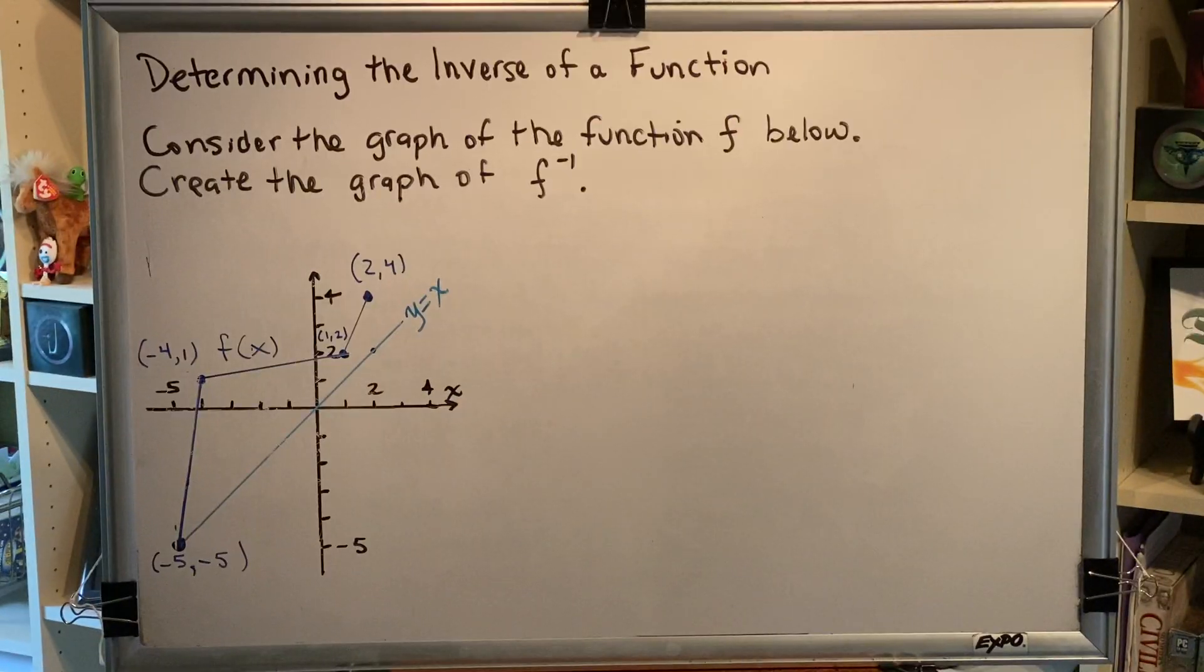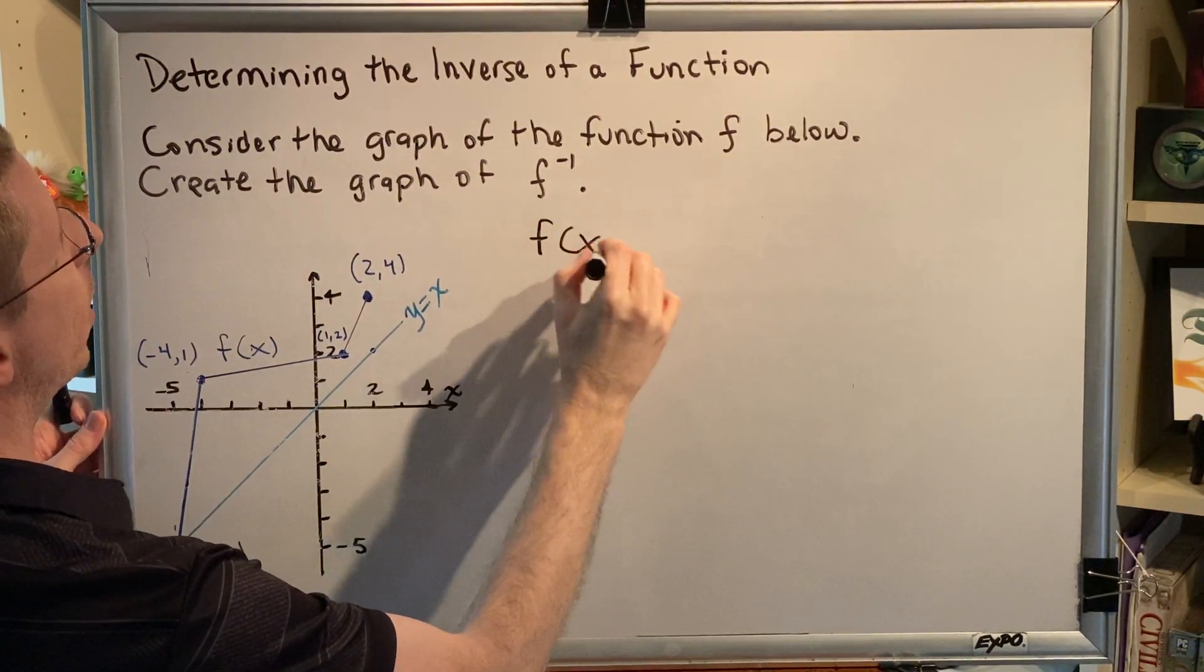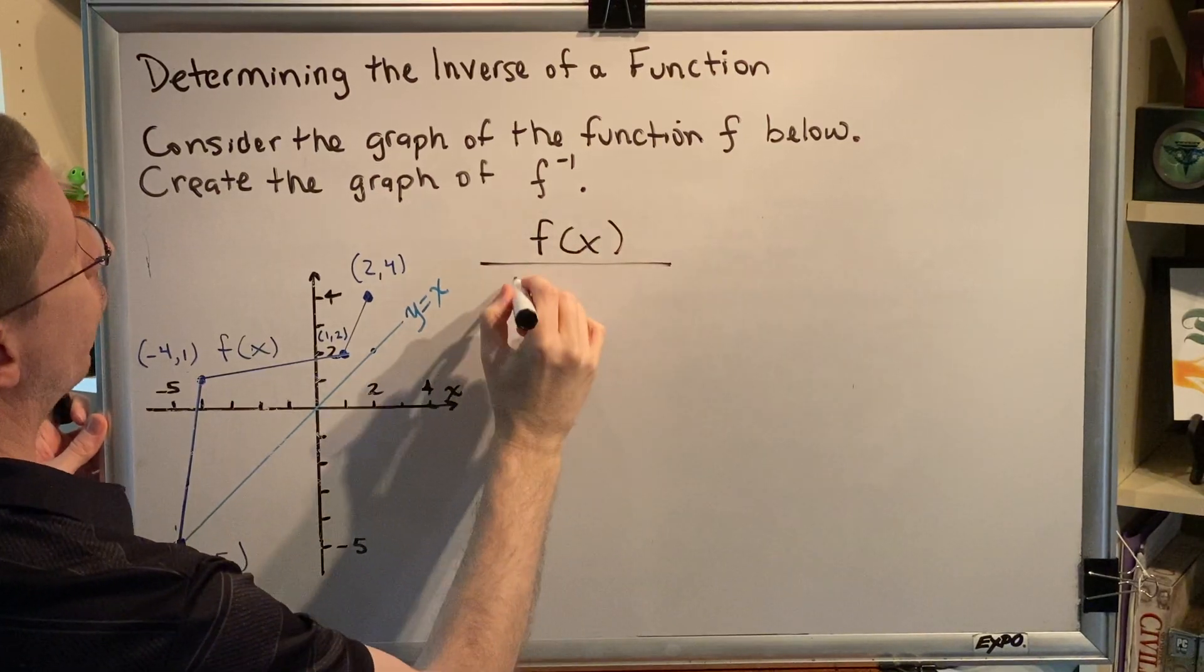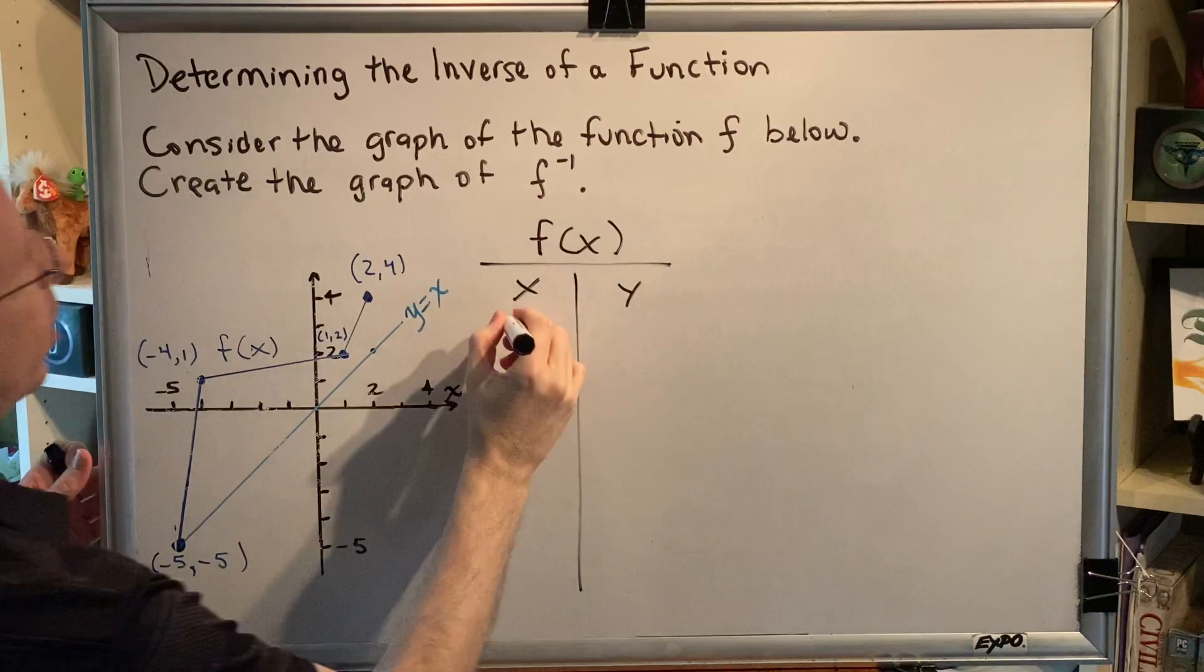So let's go ahead and begin this problem. We know that if we want to find an inverse based on a provided graph, all we have to do is swap all of the x and y coordinates. Let's make a list of the collection of the x and y coordinates for the graph provided by listing all of the x's and y's that we know.